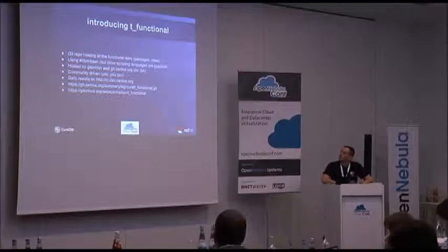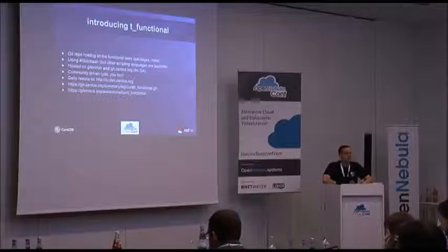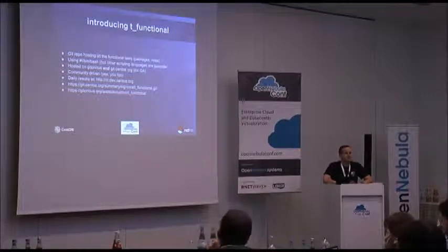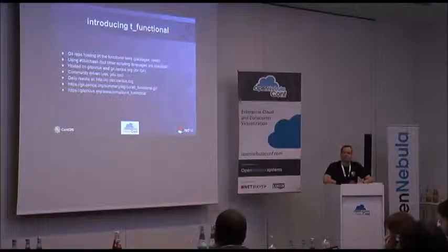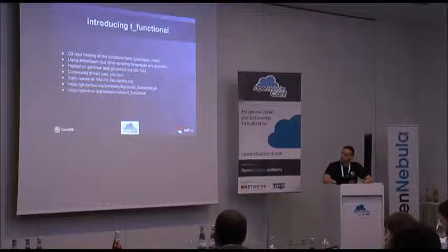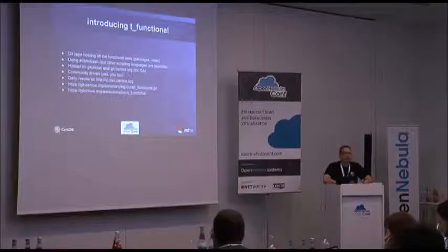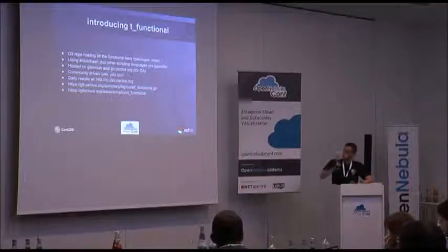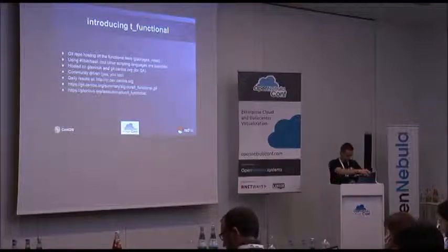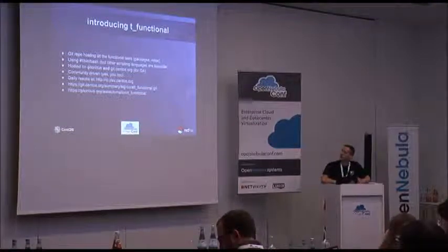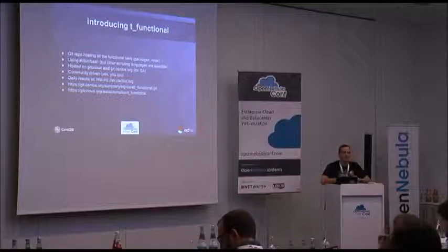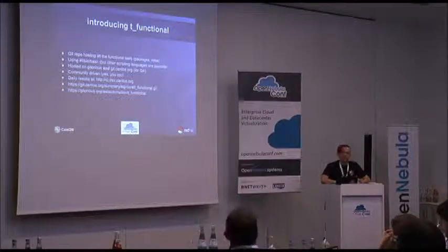t-functional is basically a git repository hosting all these functional tests. We use bash as the main scripting language but basically everything else is possible. It is hosted on gitorious.org and in the meantime also on git.centos.org. It's community driven so everybody may contribute. You can see the daily results of all tests for about a year or more back on the ci.dev.centos.org webpage. The repositories are publicly available — the one at gitorious.org and the one at centos.org, which is part of the Special Interest Group core, not SCL or anything like that.